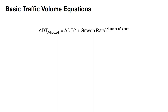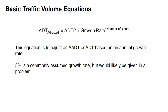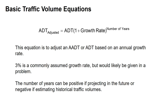We can adjust our ADT considering a growth rate: the adjusted ADT equals the ADT times (1 plus the growth rate) raised to the number of years. This adjusts an ADT based on an annual growth rate, so if you're looking at some time in the future and know your background growth rate, this equation helps you make that adjustment. 3% is a common assumed growth rate. The number of years is positive if projecting into the future, or negative if estimating historic traffic volume.